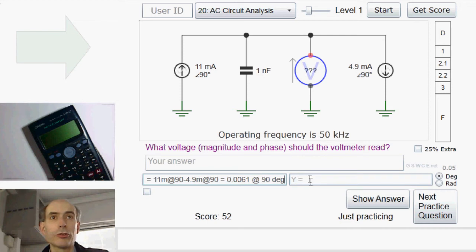If I know the current through this capacitor, I could work out the voltage across it. The voltage across it would just be the current multiplied by the impedance of the capacitor. And the impedance of the capacitor, as ever, is 1 divided by J times omega, which is 2 times pi times 50 kilohertz, times the capacitance, which in this case is 1 nanofarad.